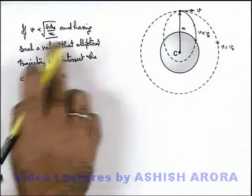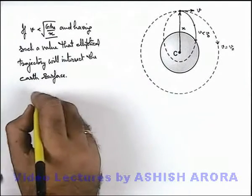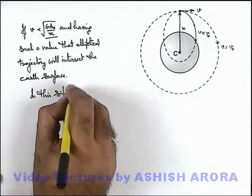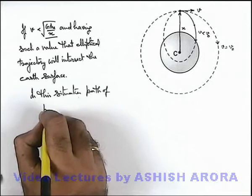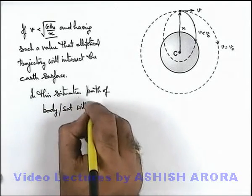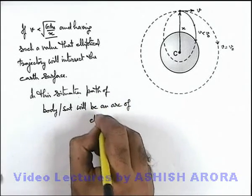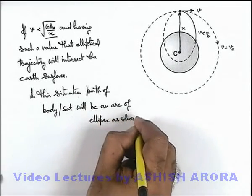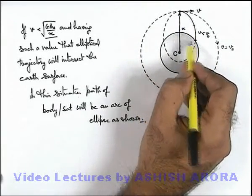So here we can state: if the speed is such that the elliptical trajectory intersects Earth's surface, then the path of the body or satellite will be an arc of the ellipse — as shown — and finally it will just be following the arc of the ellipse and land over Earth's surface.